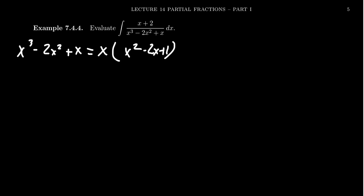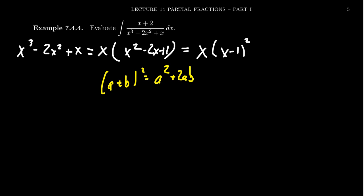x² - 2x + 1 is a perfect square trinomial — it factors as (x-1)². The first term x² is a perfect square, the last term 1 is a perfect square, and the middle term is double their product: 2x. Recall that (a+b)² = a² + 2ab + b², or using standard factoring, you need factors of 1 that sum to -2: negative 1 and negative 1.